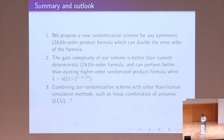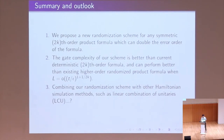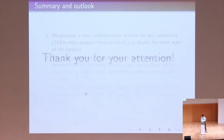Here is a quick summary and outlook. We propose a new randomized scheme that can apply to any symmetric product formula and double the error order. Our randomized scheme can outperform the current deterministic formula, and also perform better than the existing high-order randomized product formula when the error is in this complexity regime. An open question is whether we can combine our randomized scheme with other kinds of Hamiltonian simulation methods, such as linear combination of unitaries or qubitization — that would be a very interesting direction. Thank you for your attention.